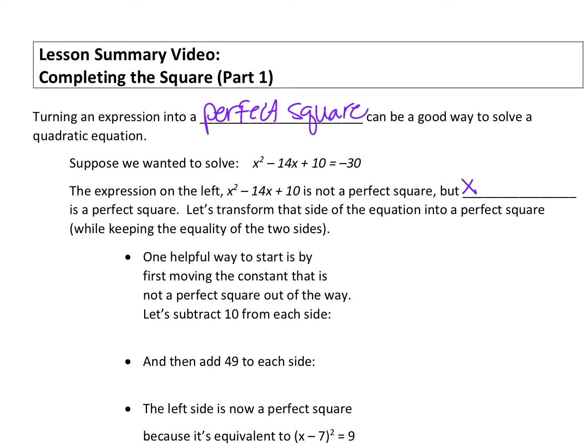But x squared minus 14x plus 49 is a perfect square. Here we have 49, which you can square root to get a 7, or a negative 7. And if you double that, that's where that negative 14 is. So that is following our perfect square pattern.